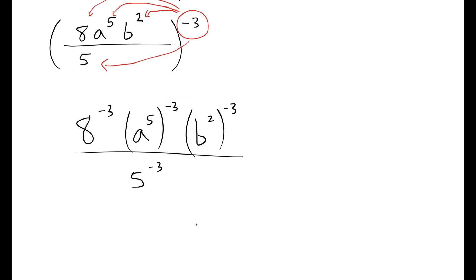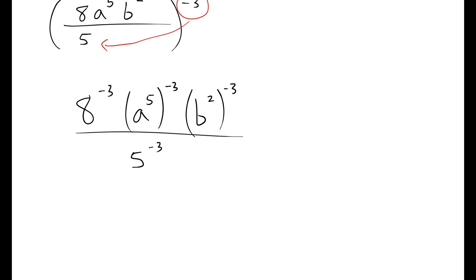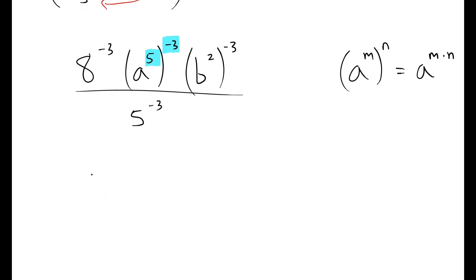That gets rid of the outer parentheses, but we now have to use some other rules of exponents. When you have a power being raised to another power, the rule is to multiply their exponents. So A to the M raised to the power of N becomes A to the M times N.